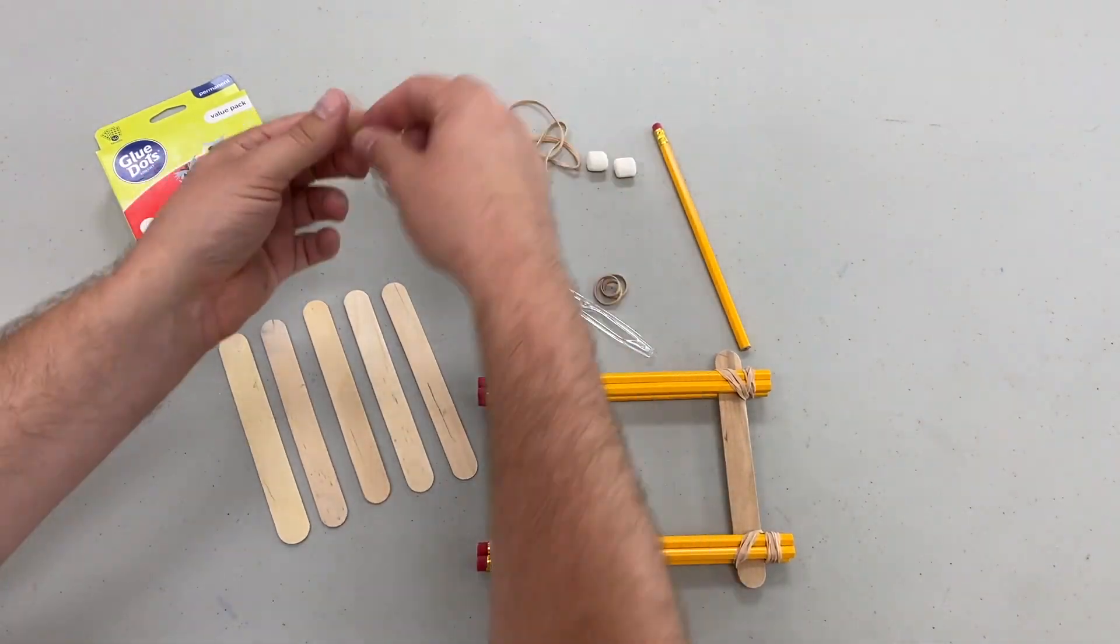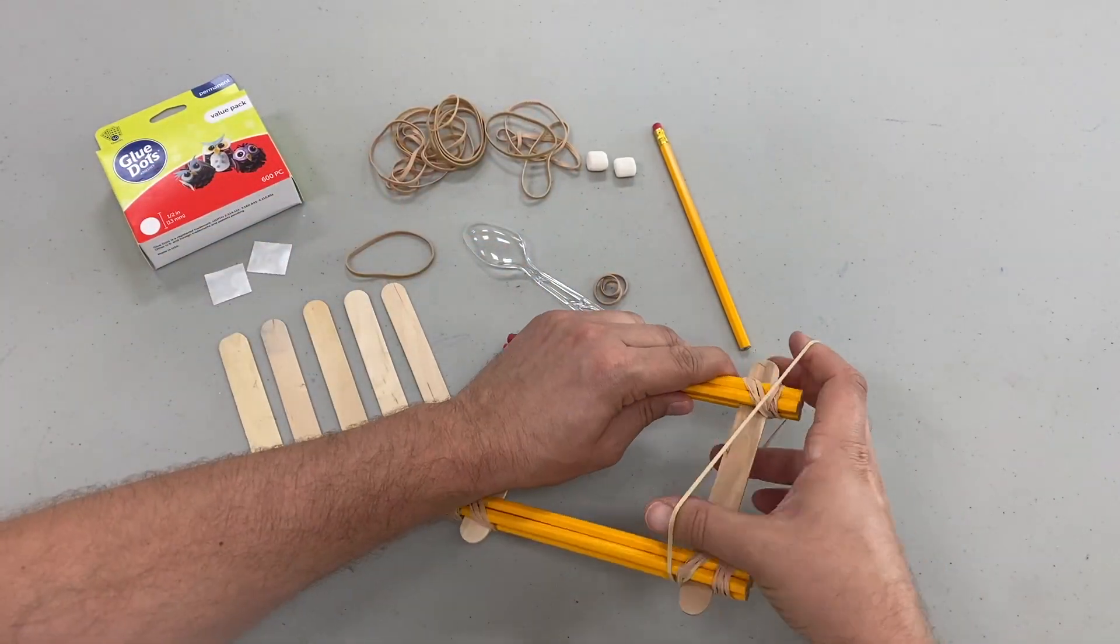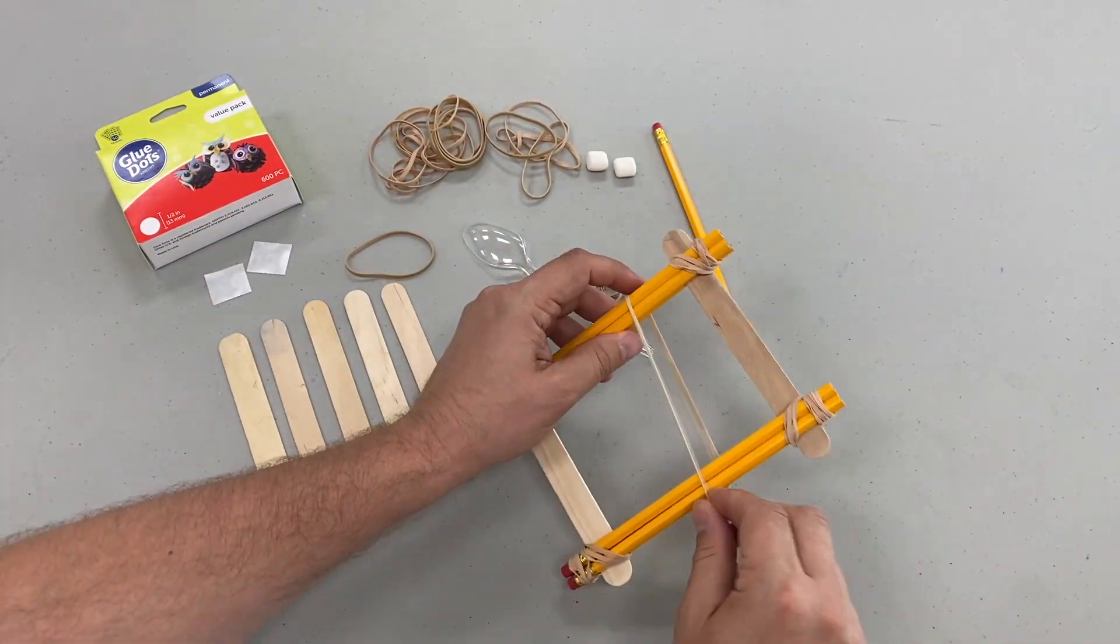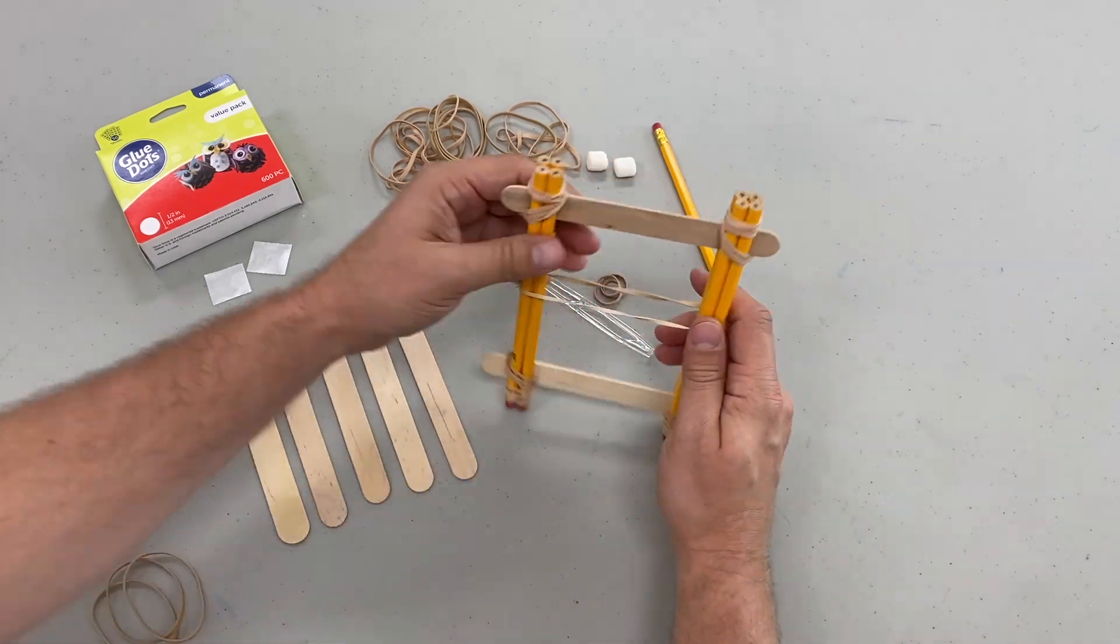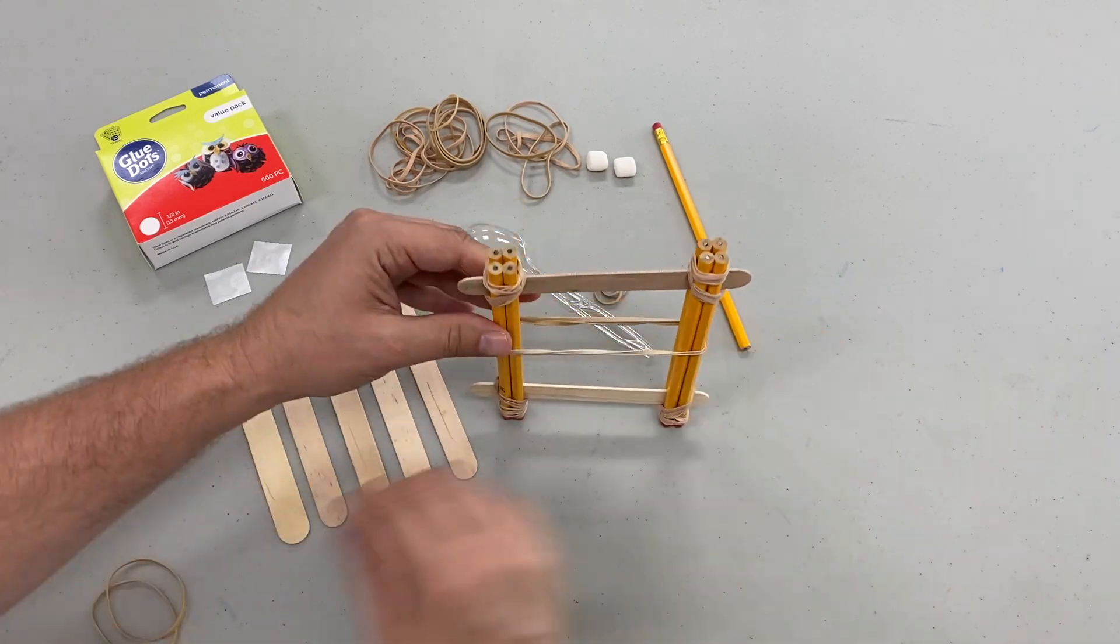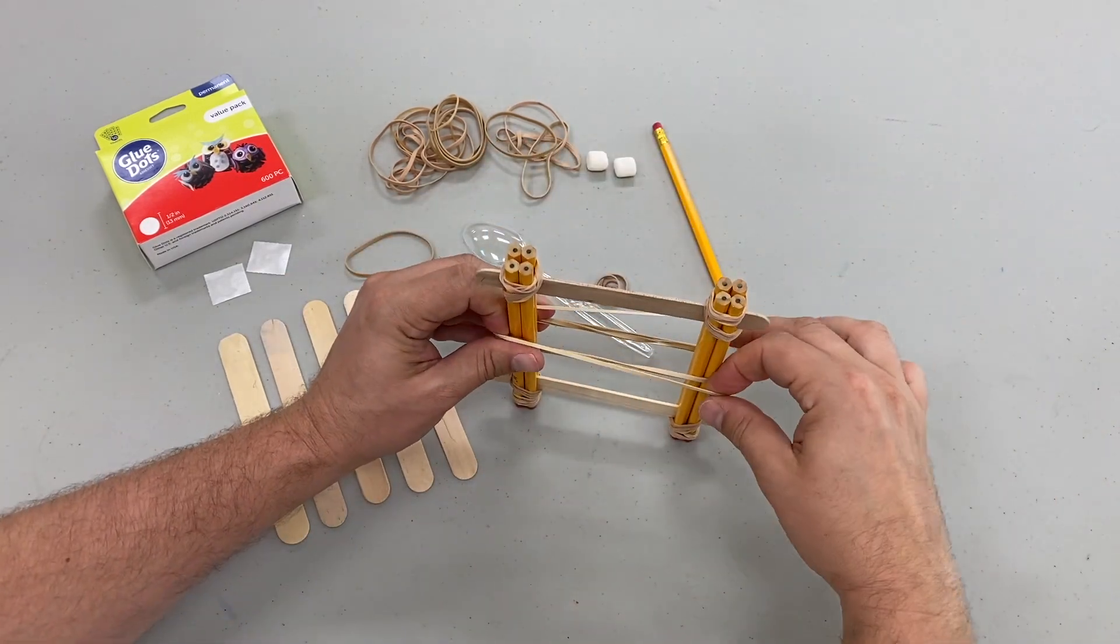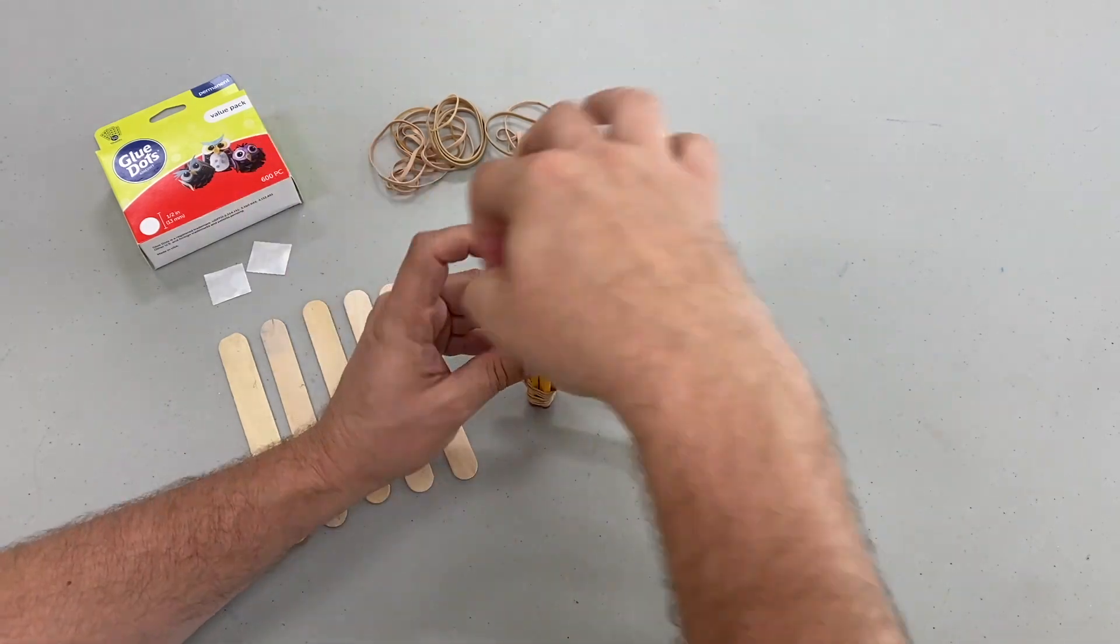Next we're going to add some rubber bands around the middle of our base. This is what's going to help us create tension in order to fire our catapult. Only use as many rubber bands as necessary. You don't want the base to start twisting, so make sure it holds its rectangular shape.